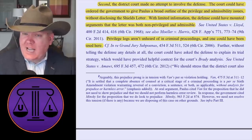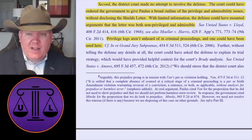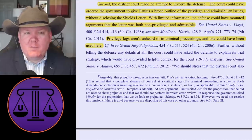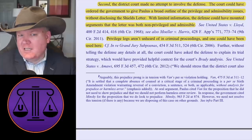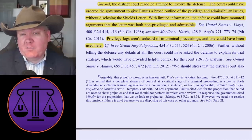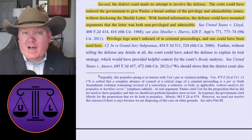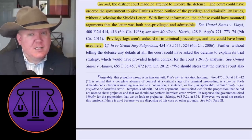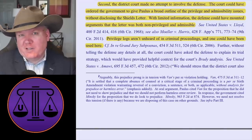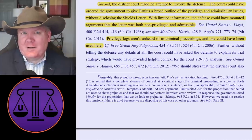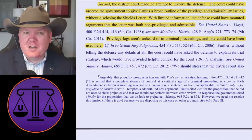Second, the district court made no attempt to involve the defense lawyers. The court could have ordered the government to give Paulus a broad outline of the privilege and admissibility issues without disclosing the letter itself. You could alert defense counsel to the issue without telling them what the letter says — saying, 'we have this letter, here are the circumstances, and we think there might be a problem.' The defense could have made an argument that the letter was both non-privileged and admissible. By way of comparison, privilege logs — which are more common in civil proceedings — are not unheard of in criminal proceedings, and one could have been used here. When something is privileged, you put it in a privilege log and disclose the log, giving enough information to fight over privilege without actually revealing the privileged information.